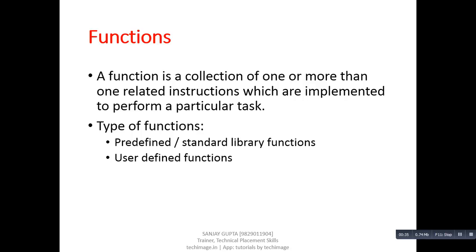There are total two types of functions available in C. First is predefined, which are also known as standard library functions — for example printf, scanf, getch. These all are predefined functions and we have to include a header file for predefined functions execution. Another category is user defined function. User defined functions must be implemented by the programmer and the programmer has to implement all its necessary parts themselves.